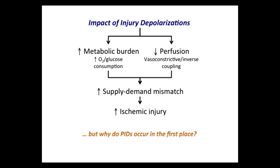As you can imagine, the energy required to restore the transmembrane ion gradients imposes a heavy metabolic burden. At the same time, injury depolarizations cause vasomotor constriction in brain arteries, and by doing that, they reduce the blood supply. So in two parallel independent ways, injury depolarizations promote cell death.